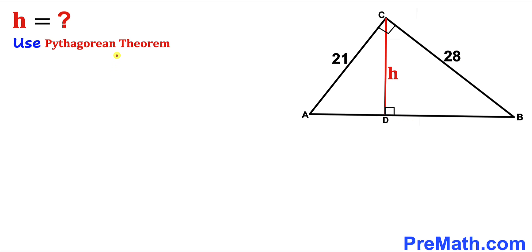Therefore we are going to use the Pythagorean theorem, which states that a squared plus b squared equals c squared. Let me go ahead and call this longest leg AB as side c, this side lowercase a, and this side lowercase b.